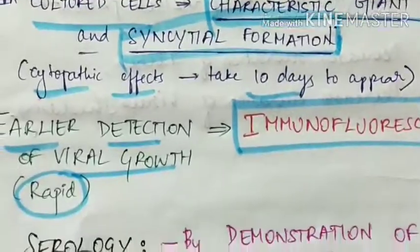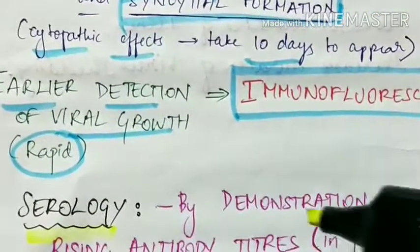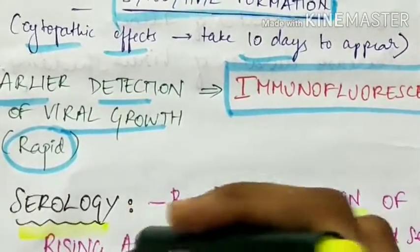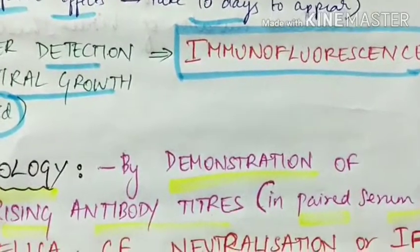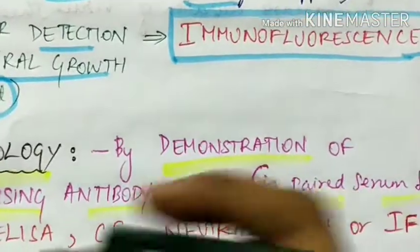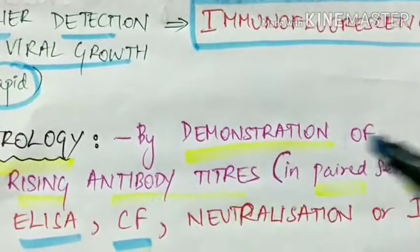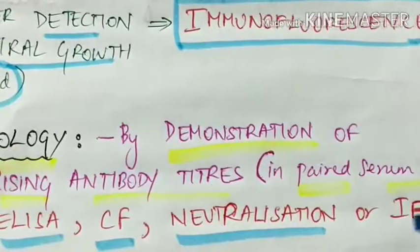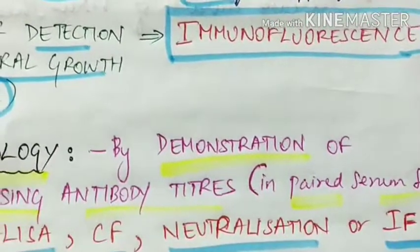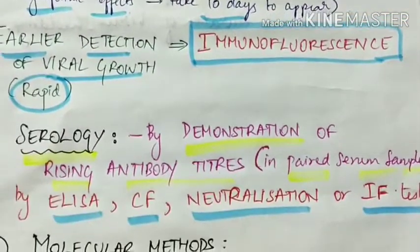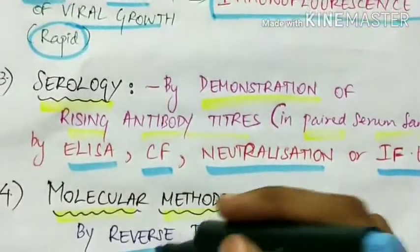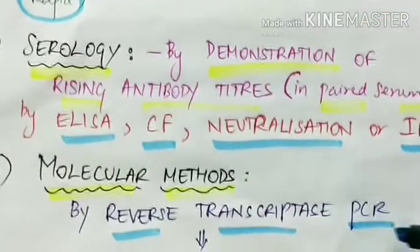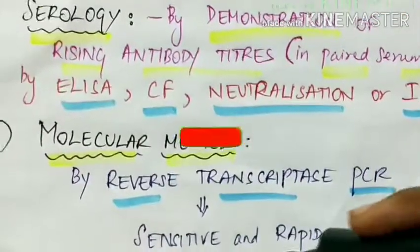Third is serology: performed by demonstration of rising antibody titers in paired serum samples. This is performed by ELISA (enzyme-linked immunosorbent assay), complement fixation (CF), neutralization, or immunofluorescence tests. Fourth is molecular methods: reverse transcriptase polymerase chain reaction (RT-PCR), which is very sensitive and rapid.